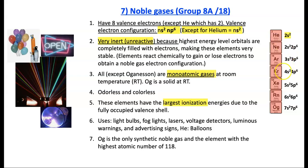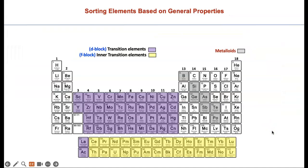All except oganesson are monoatomic gases at room temperature. Og is a solid at room temperature. They are all odorless and colorless. These elements have the largest ionization energies due to the fully occupied valence electrons. Ionization energy is the energy required to remove one valence electron. If all the valence electrons are filled in a sub-energy level, it's very hard to remove them. Here are some of the uses. They are used in fluorescent light bulbs, lasers, voltage detectors, luminous warnings, advertising signs, helium balloons. Og is the only synthetic noble gas and the element with the highest atomic number.